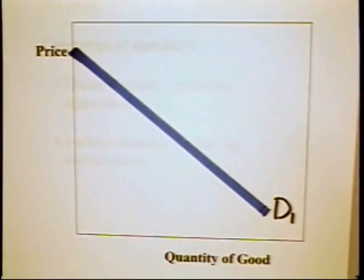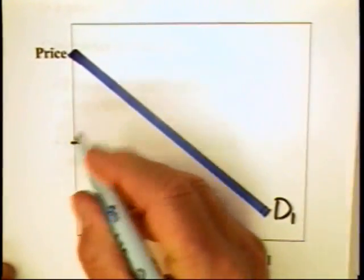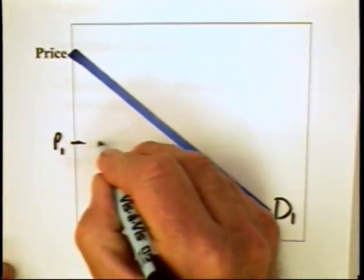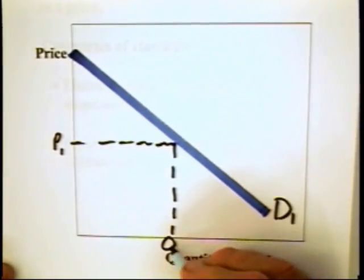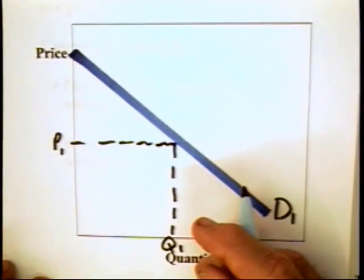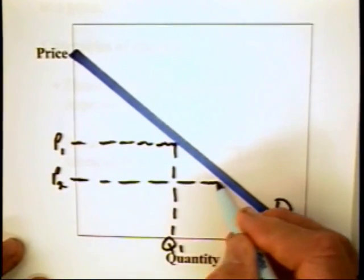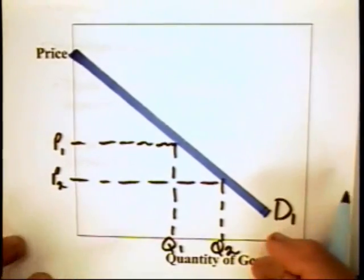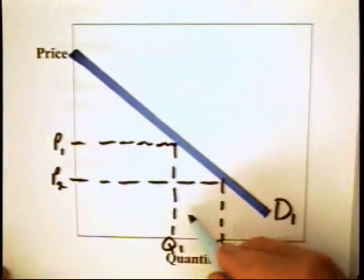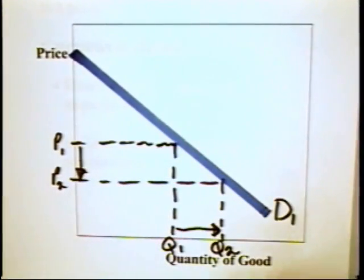In the case of this graph, which you have seen multiple times before, the demand curve is sloping downward — that's no big news. At a price of P1, the quantity consumed is Q1. Now if the price goes from P1 to P2, the quantity goes from Q1 to Q2. There's been a fairly substantial increase in the quantity given the price reduction.